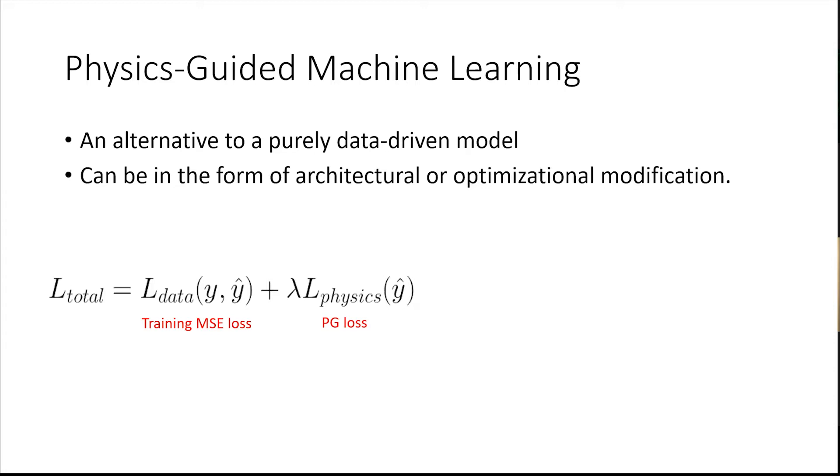This paradigm is referred to as physics guided neural networks. Doing this, the model can learn to generalize better beyond seen data and avoid giving results that are physically inconsistent. However lambda is usually a constant that is assigned based on intuition or hyperparameter tuning which could be a hassle.